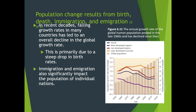In recent decades, falling growth rates in many countries have led to an overall decline in the global growth rate. You can see on this graph that the world population growth rate was increasing in the 1970s — that's when the 'population bomb' book came out. In the US, birth control wasn't available to unmarried women until 1970, which also helped bring global growth rates down. Growth rates in more developed regions fell, but in less developed countries they stayed steady.